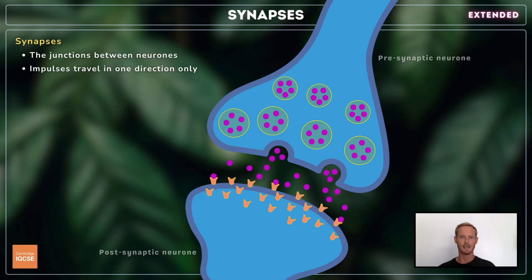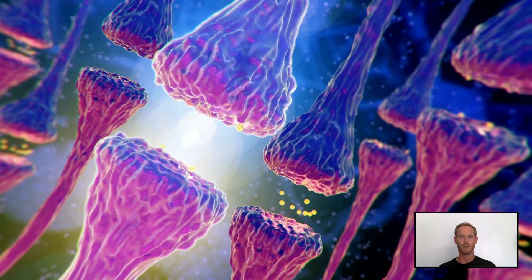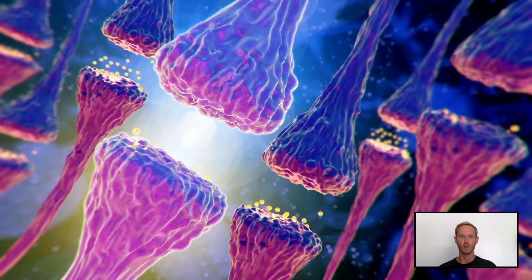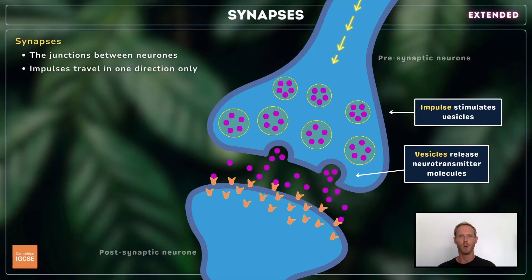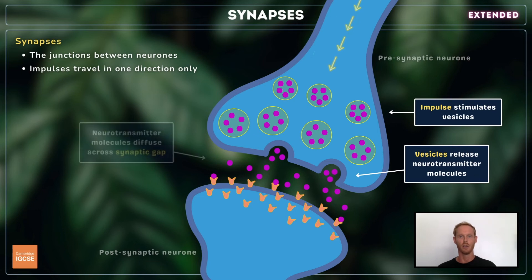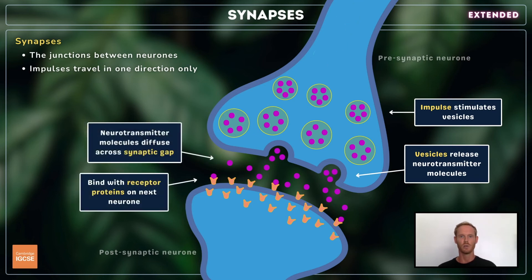Synapses are the junctions between neurons. Electrical impulses are passed across synapses from one neuron to another in one direction only. When an impulse arrives at the synapse, membrane-bound structures called vesicles release chemical messengers called neurotransmitters. The neurotransmitter molecules diffuse across the synaptic gap from the presynaptic neuron and then bind with receptor proteins on the other side. This stimulates a new impulse in the post-synaptic neuron which carries the message onwards to the next part of the system.